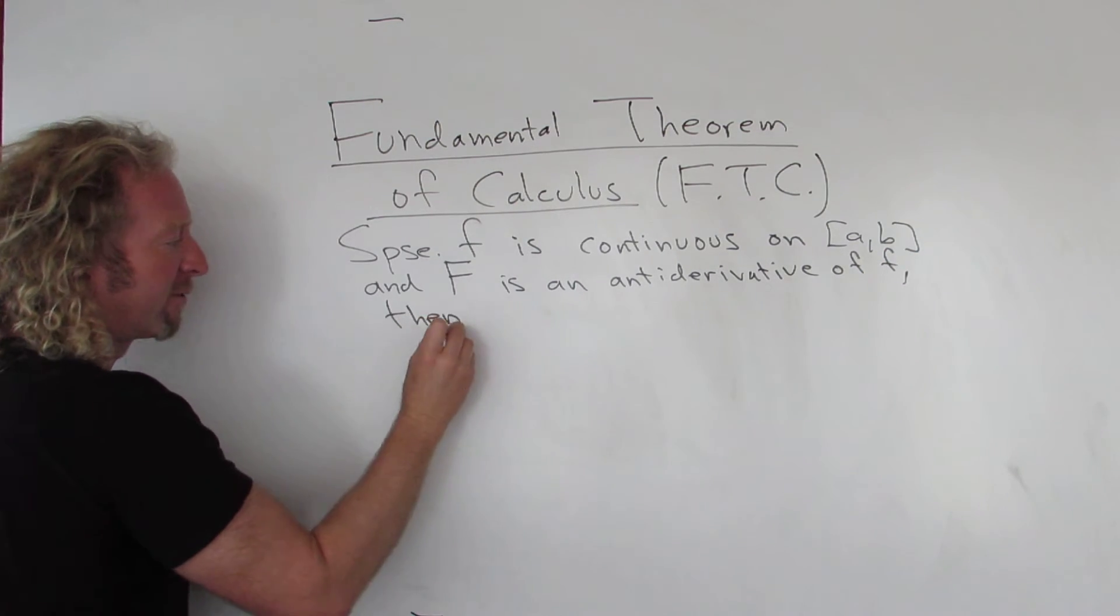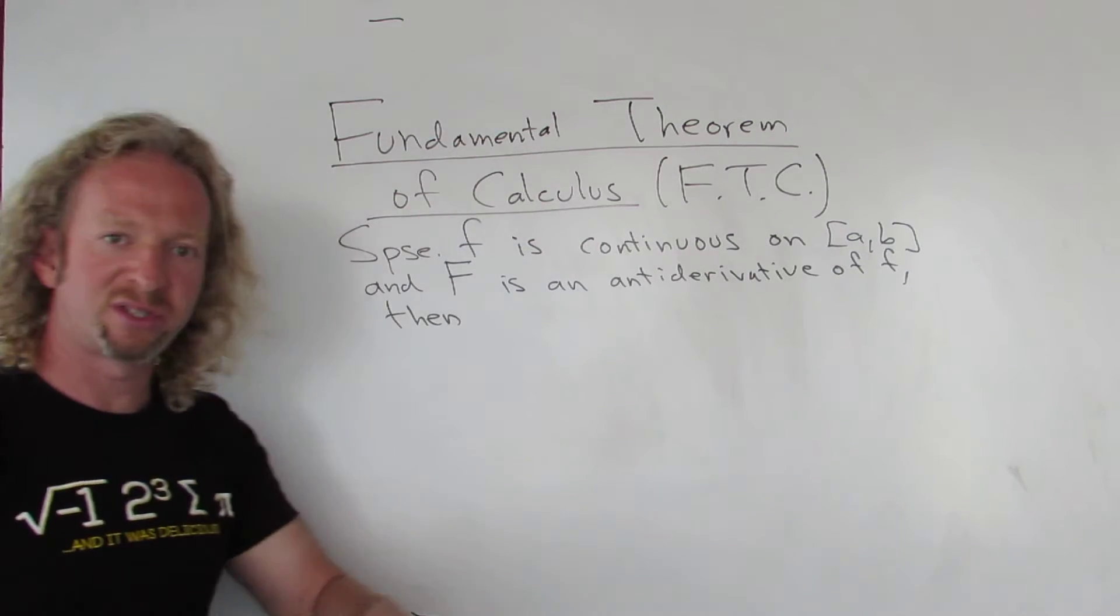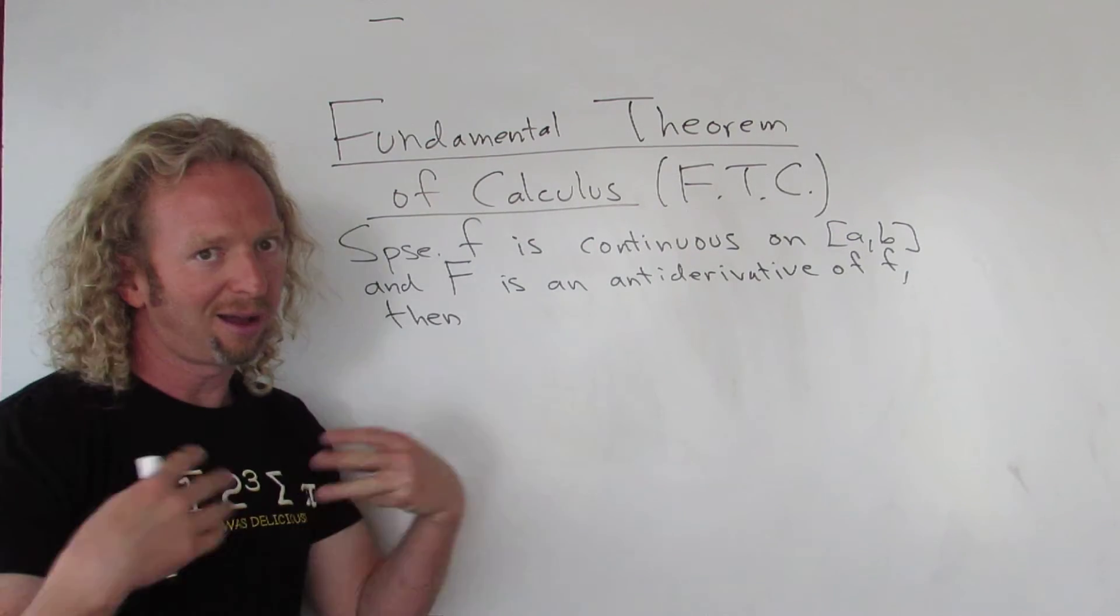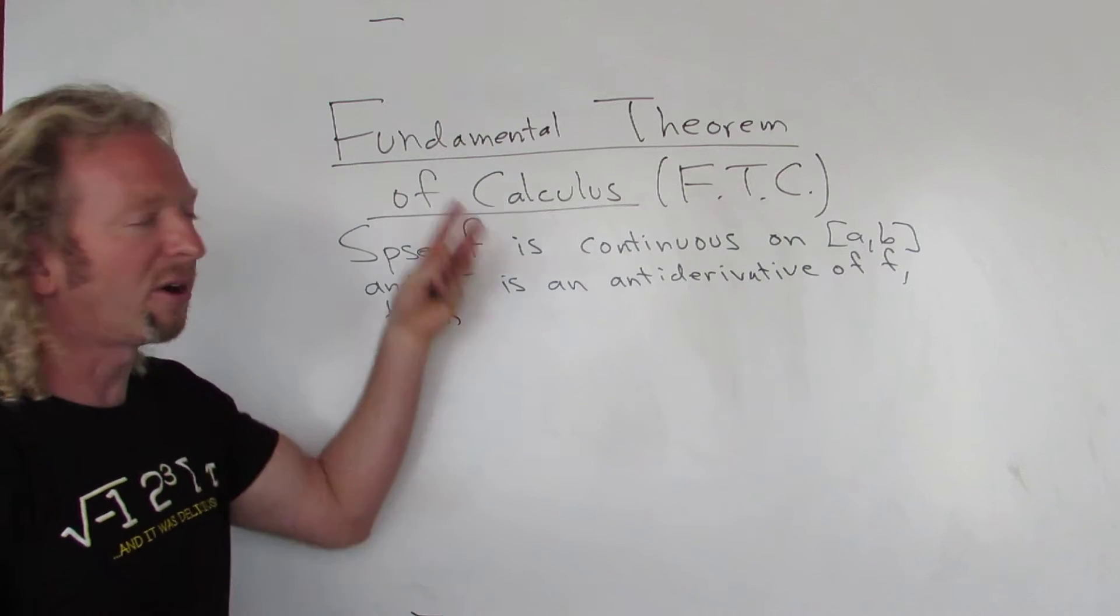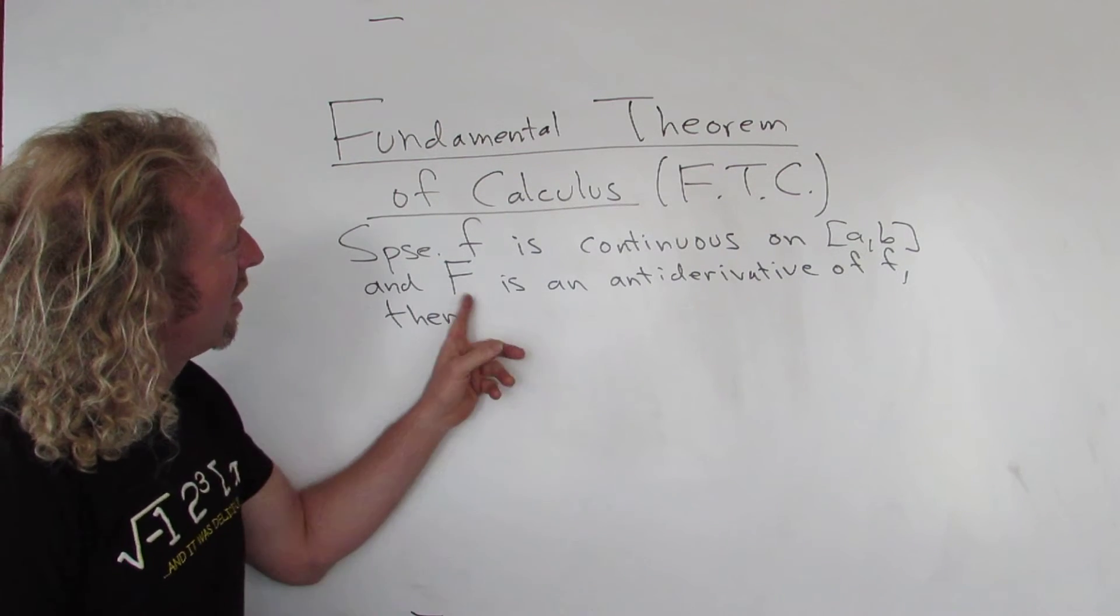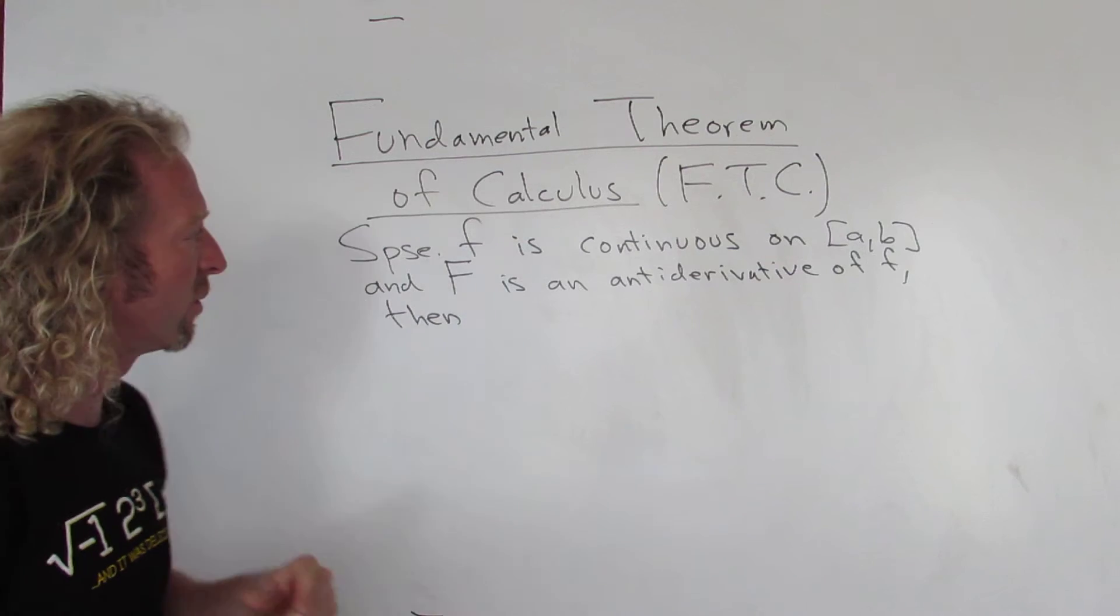Then let's pause here for a moment. So we have a continuous function on a closed interval, which seems to be a very common requirement for all of the theorems in calculus. And big F is an antiderivative. So what does that mean?